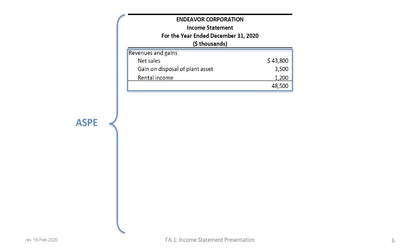We will now begin by building out a single-step income statement prepared under ASPE. The title begins with 'Income Statement' and it is for the year ended December 31st, 2020. The correct title for an income statement is 'for the year ended' or 'period ended' if it is less than a year. The scale of our income statement here is in thousands, so when we say net sales of $43,800, we mean $43,800,000.